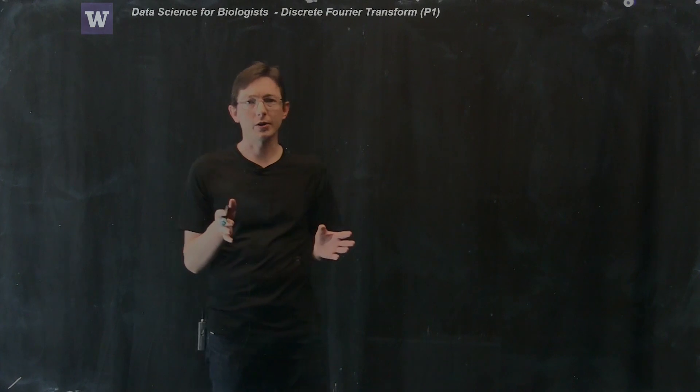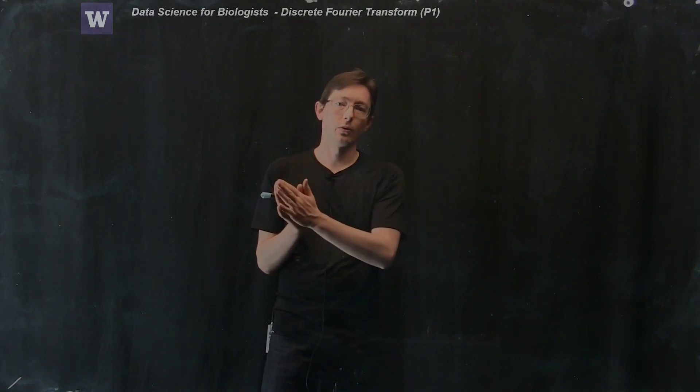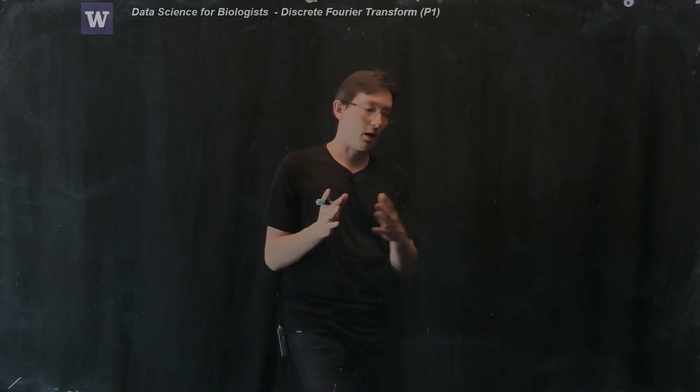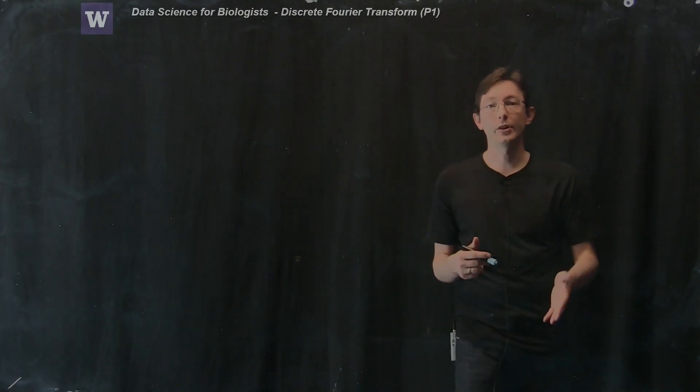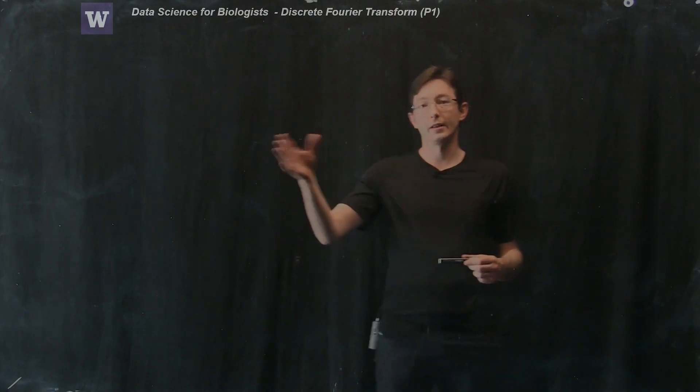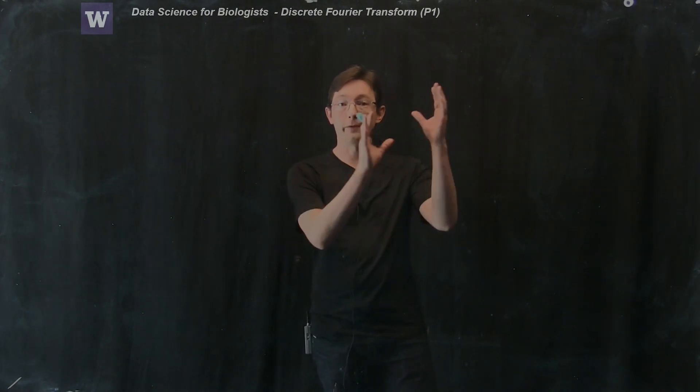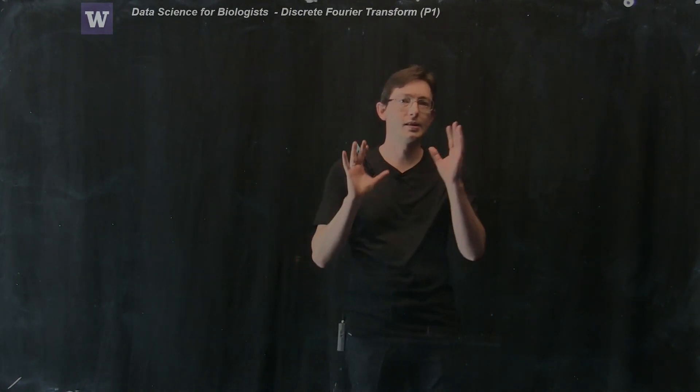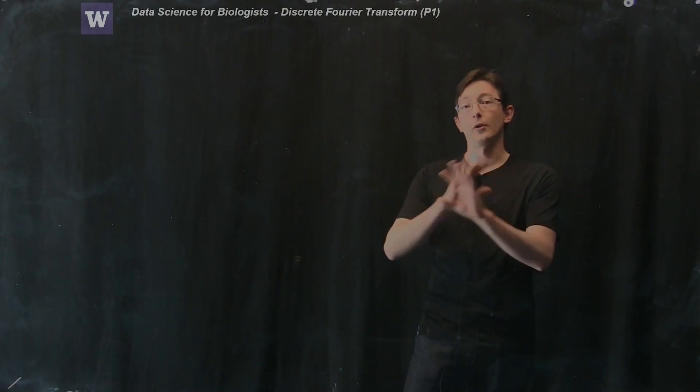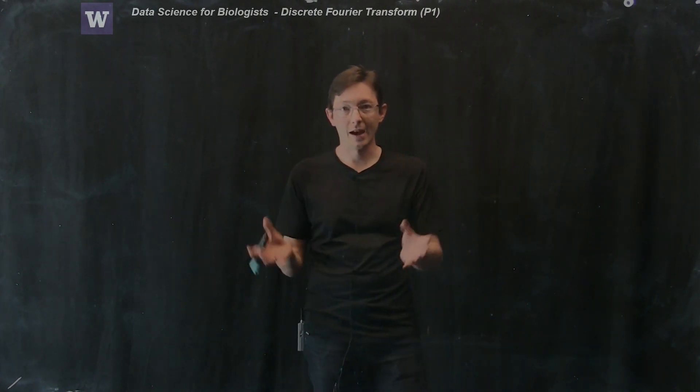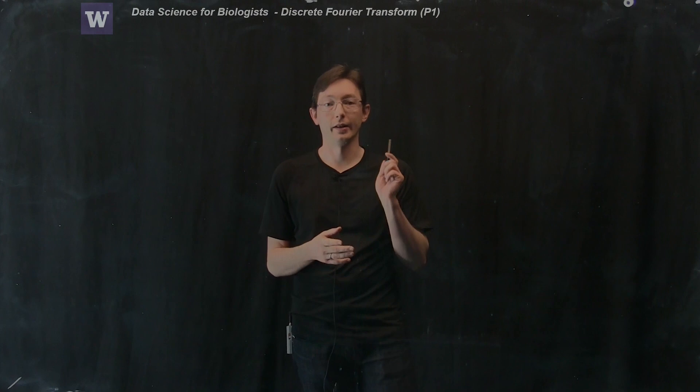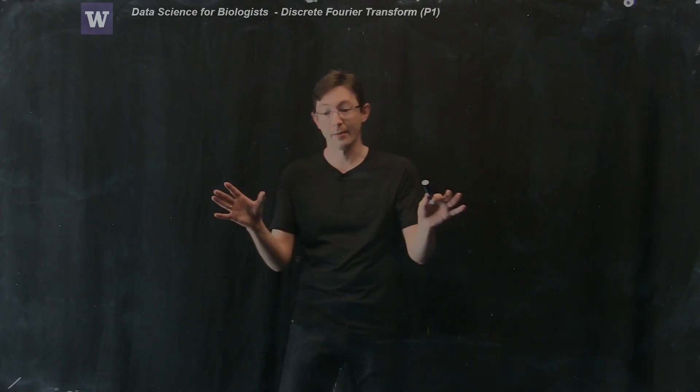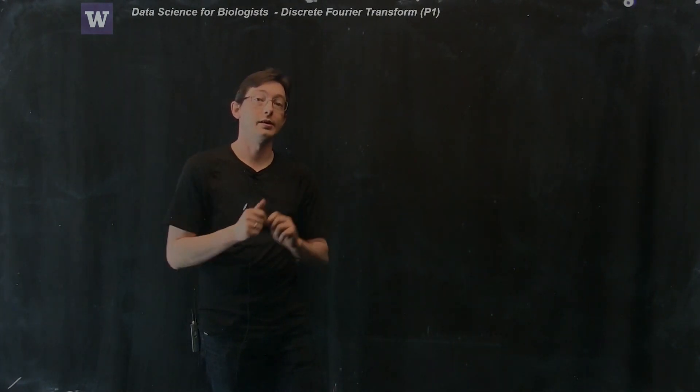And the Fourier transform is extremely important for image compression, audio compression. Whenever you talk on your cell phone or send a picture over the internet, you're using a Fourier transform to compress that data and then to decompress that data. So this is a central algorithm for all of data analysis and data compression, and I'm going to tell you a little bit about the mathematics and then show you how to use this in MATLAB.